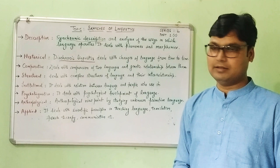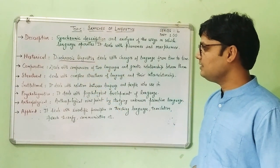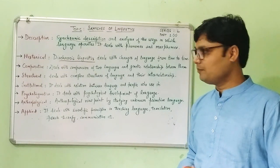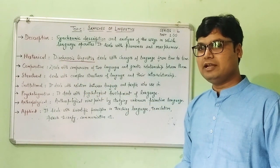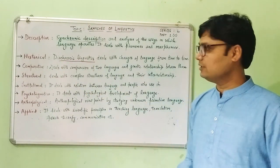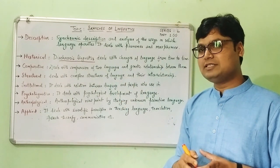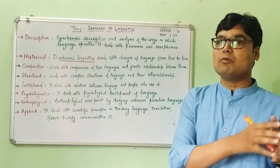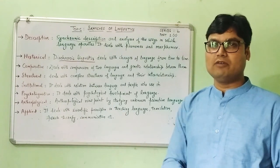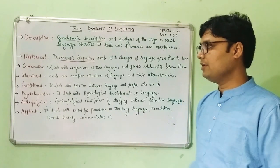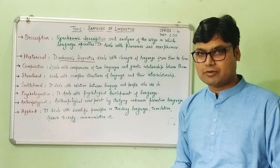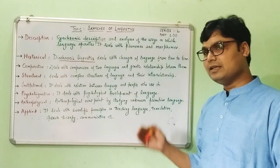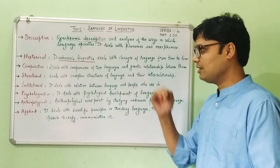Next is historical linguistics. This is diachronic linguistics, which deals with changes of language from time to time — a word we have already discussed in a previous lecture. Diachronic means when we study the development of language from one generation to another, or from one time period to another. So in historical linguistics, we study language diachronically.